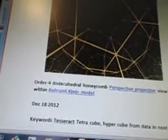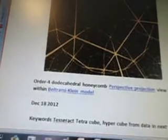The keyword 120-dodecahedral cells in three-space brings up this image here. Okay, so order four Dodecahedron honeycomb perspective projection view within Beltrami Klein model.